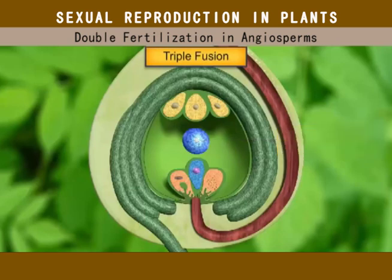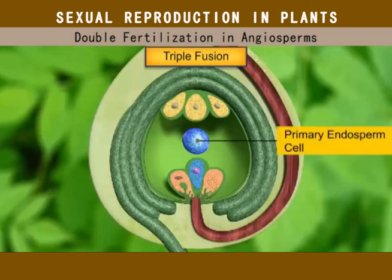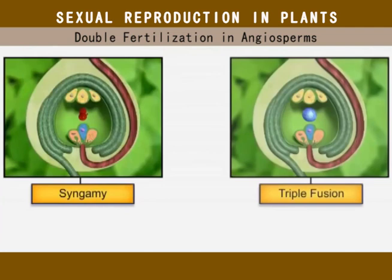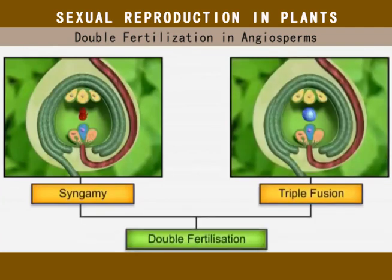After the triple fusion, the central cell is called the primary endosperm cell. Therefore, syngamy and triple fusion together complete the double fertilization in angiosperms. Thank you.